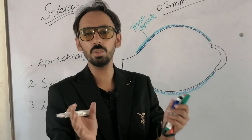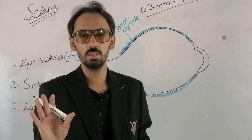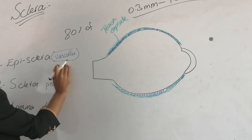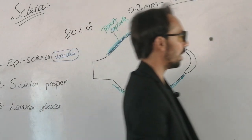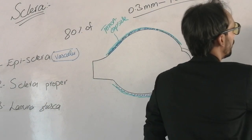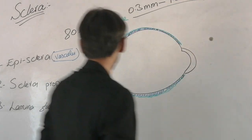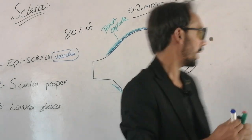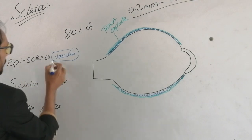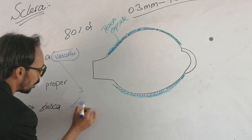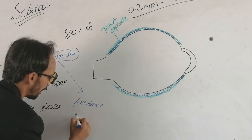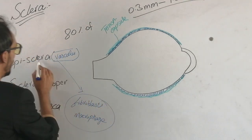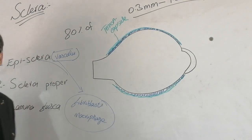The sclera is a very opaque structure with very limited blood supply, so the episclera as a vascular layer provides selected nutrition to the sclera. The episclera is made up of dense connective tissue and contains specialized cells such as fibroblasts and macrophages.